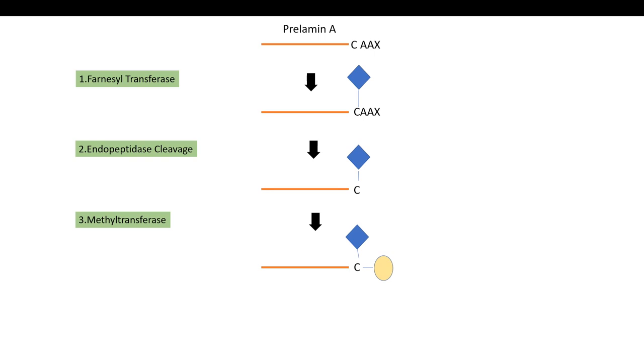Inside the nucleus, this form of prelamin A attaches itself to the inner nuclear membrane, and the farnesyl group acts as lipid anchor. Then a fourth enzyme known as zinc metallopeptidase cleaves 15 amino acids from the C-terminal end. This includes the farnesyl and methylated cysteine present at the C-terminal end. The end product after this zinc metallopeptidase step is known as lamin A.